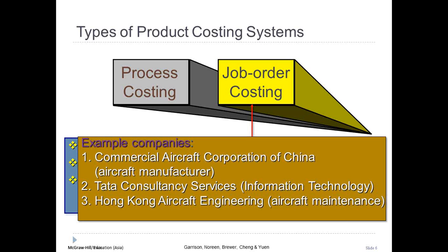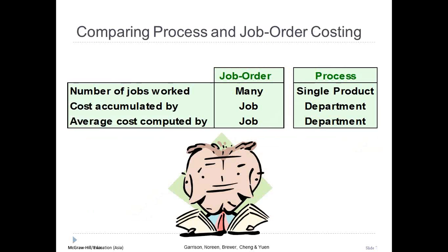Hong Kong Aircraft Engineering provides routine maintenance and emergency service to aircraft. In comparing the two systems: with job order costing, many jobs are worked on during the period; with process costing, a single product is produced for a long period of time. With job order costing, costs are accumulated by individual jobs; with process costing, costs are accumulated by department. Average unit costs are computed by job under job order costing, and by department for process costing.